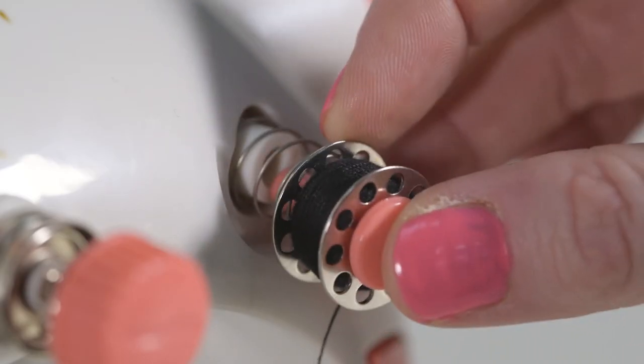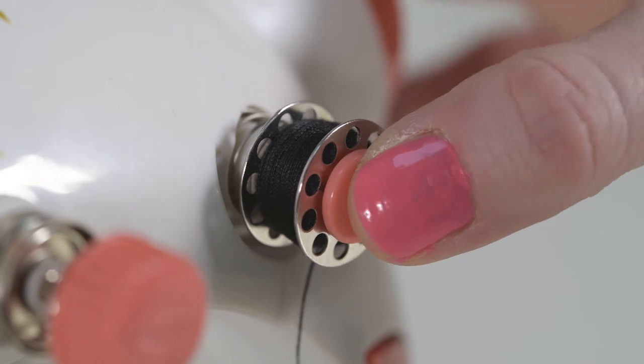Next, click the pre-wound bobbin and holder back onto the front bobbin holder spring and click into position.